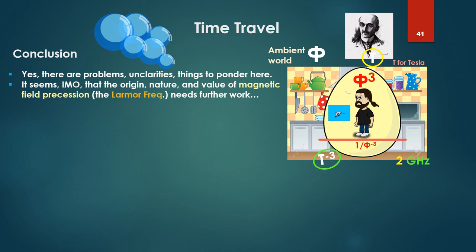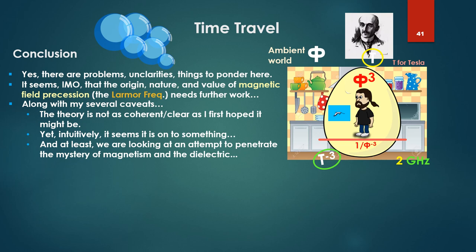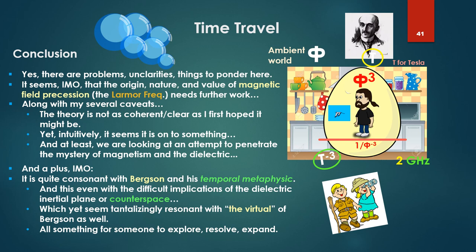So yes, there are problems, unclarities, things to ponder here. It seems, in my opinion, at the origin, nature and value of magnetic field precession, what Ken likes to call the Lamour frequency, needs further work, clarification, along with my several caveats I've noted. The theory is not as coherent, clear as I first hoped it might be. Yet intuitively, it seems on to something. At least, we are looking at an attempt to penetrate the mystery of magnetism and the dielectric. That is, we're bringing back the electromagnetic science that has been conveniently submerged. And the plus, in my opinion, it is quite consistent with Bergson and his temporal metaphysic. And this, even with the difficult implications of the dielectric inertial plane or counter space.